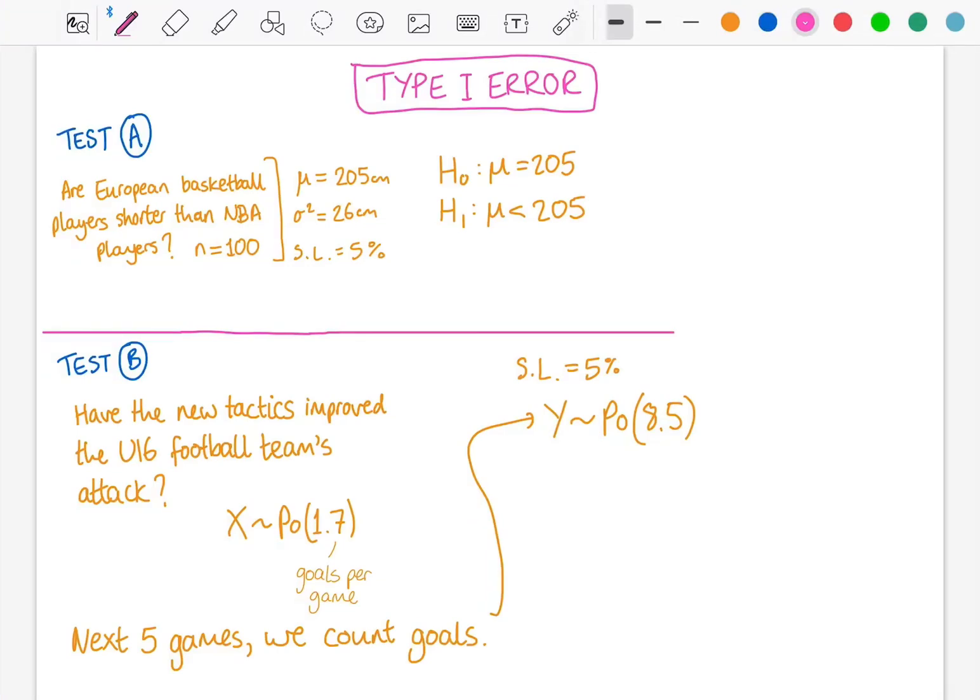To understand type 1 error, you need to really recap what a hypothesis test is in the first place. You are making some kind of claim or hypothesis or suggesting that something has changed, that something doesn't fit into a population, something's not right. And you are usually taking a sample to see whether that is true.